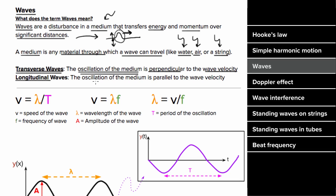For longitudinal waves, the oscillation or disturbance of the medium is parallel to the wave velocity. The classic longitudinal wave is sound. If a sound wave were traveling rightward through the air, it would look like a compressed region, and the air itself would move back and forth — right and left — parallel to the direction the wave disturbance is traveling, which makes sound waves longitudinal.